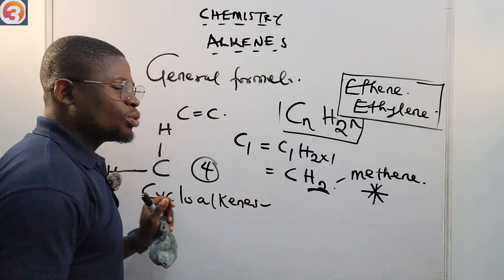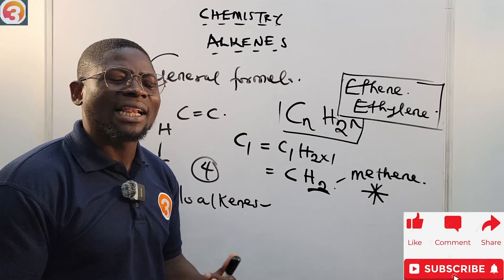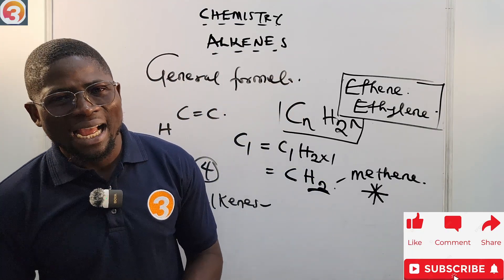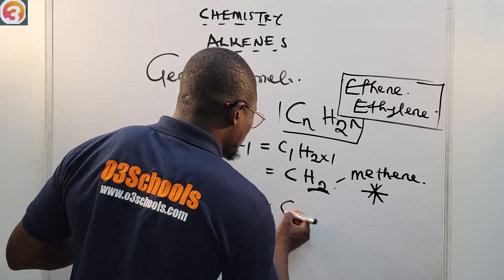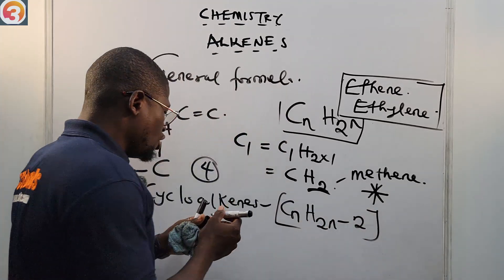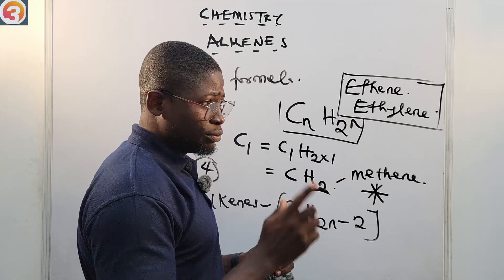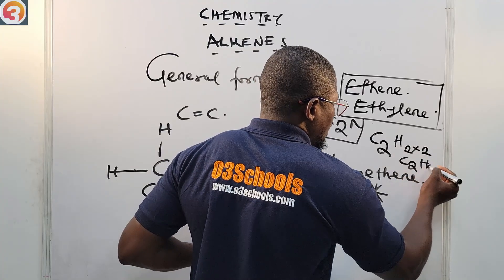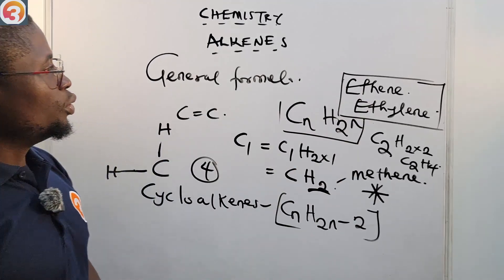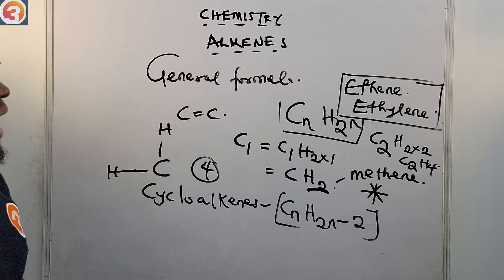Cycloalkenes have the same general formula as the alkynes. The general formula of the alkynes is CₙH₂ₙ₋₂. The first member of the alkynes is ethyne (also called acetylene). Ethyne has two carbon atoms, so putting n = 2 gives C₂H₄ — that is the formula of ethene. So the simplest member of the alkenes is not methene but ethene.